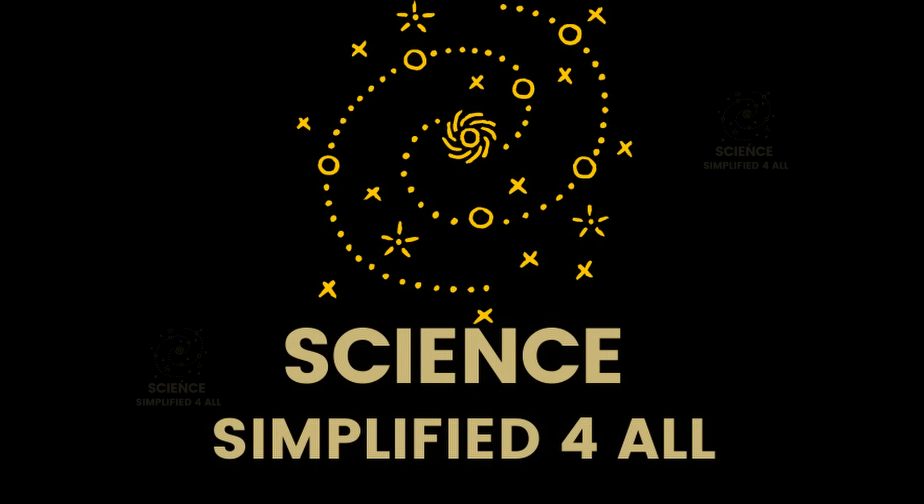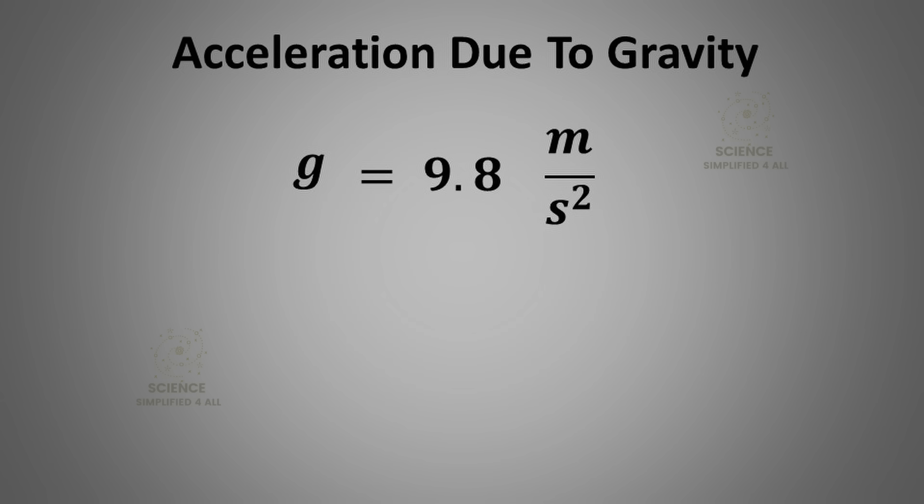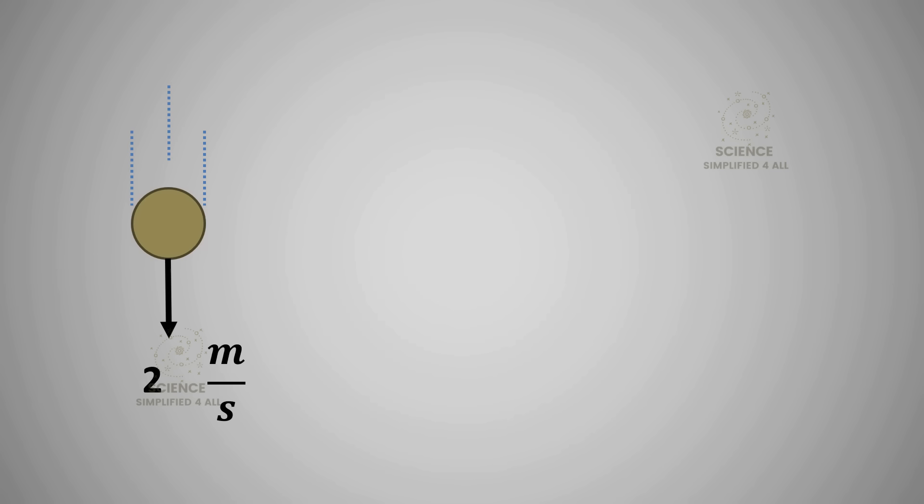Hi friends, and welcome to another episode of Science Simplified for All. The acceleration due to gravity on the surface of the Earth is 9.8 meters per second squared. But to make calculations easier, let us temporarily round that off to 10 meters per second squared. Pay special attention to the unit. Meters per second squared. What does that mean?